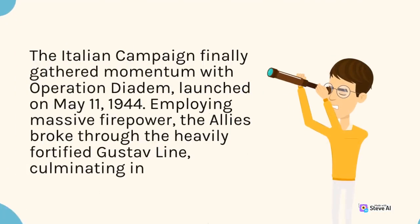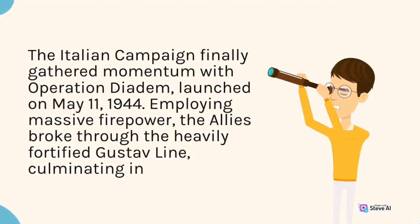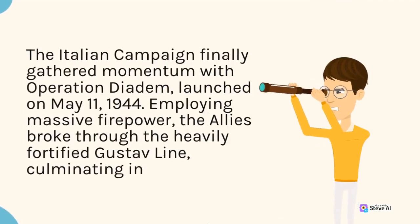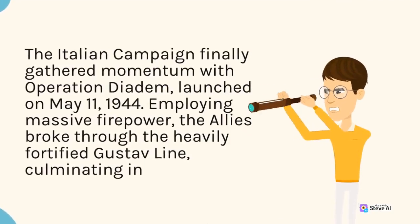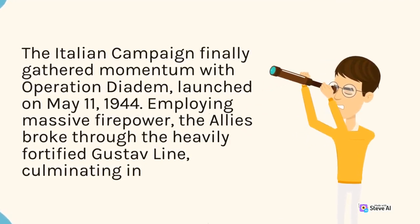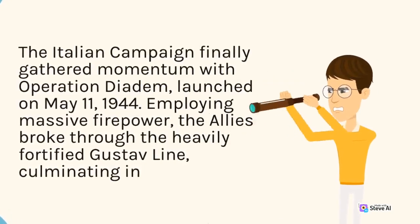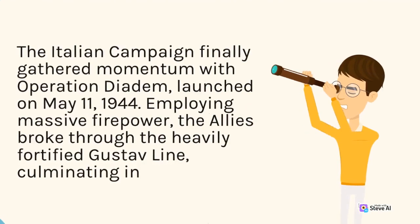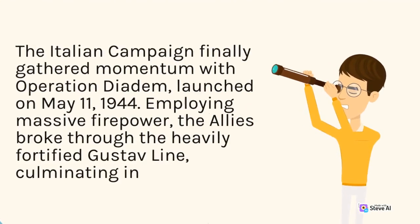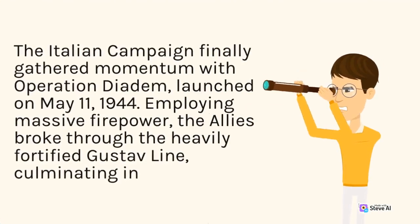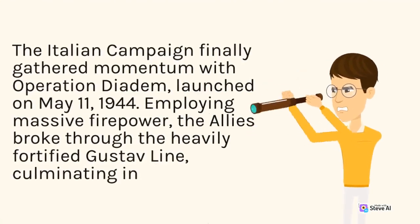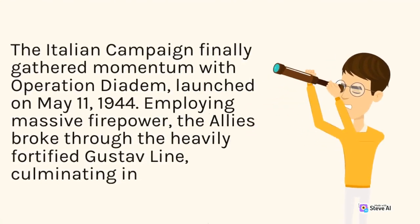The Italian campaign finally gathered momentum with Operation Diadem, launched on May 11, 1944. Employing massive firepower, the Allies broke through the heavily fortified Gustav Line.